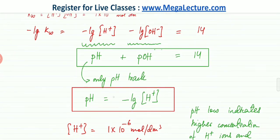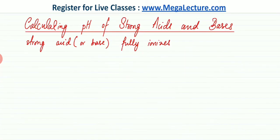pH stands for the negative log of the concentration of H⁺ ions. We're going to learn how to calculate the pH of strong acids and strong bases. The definition of a strong acid is that it fully ionizes.